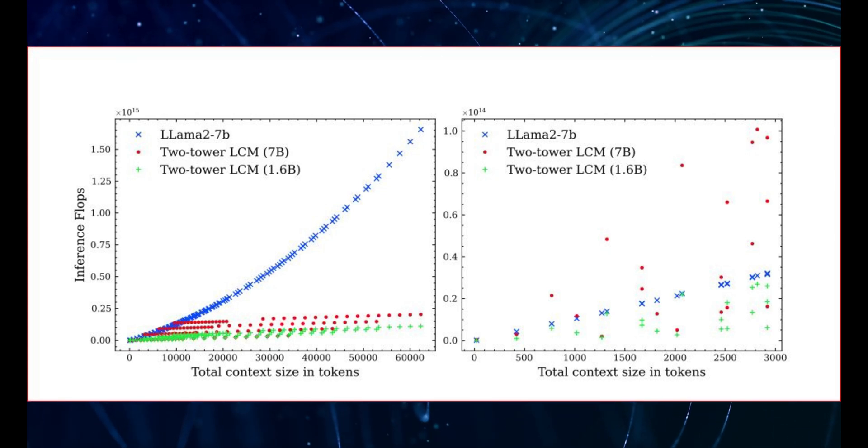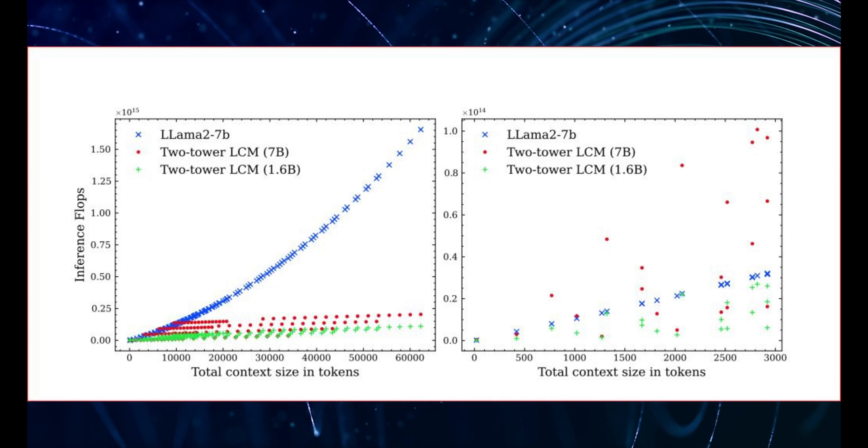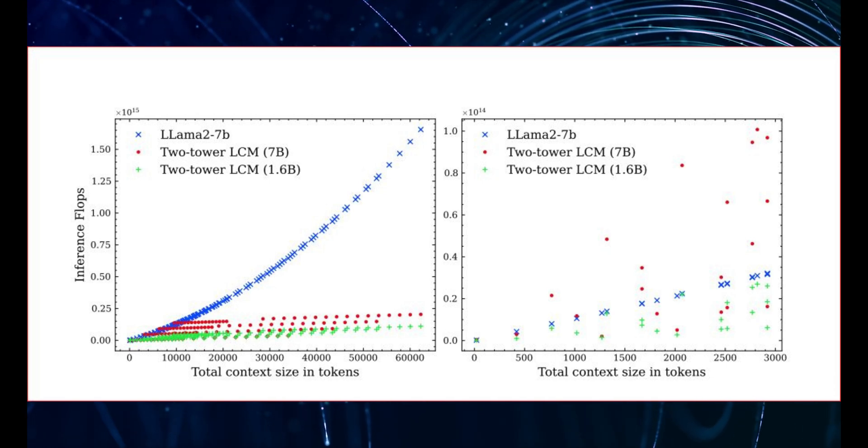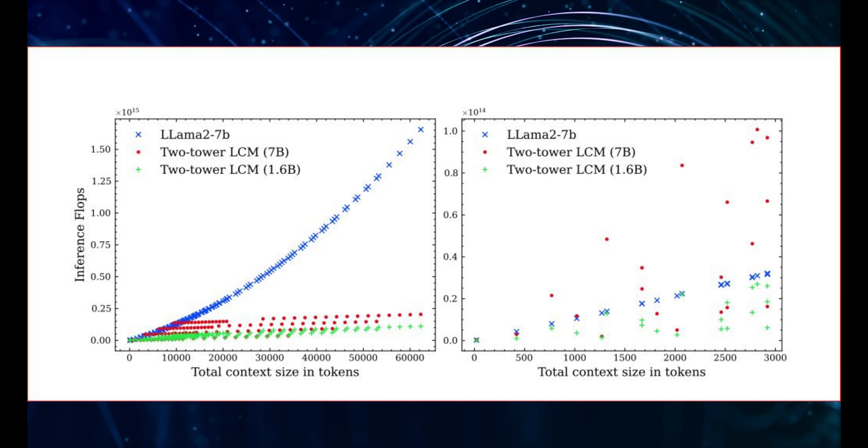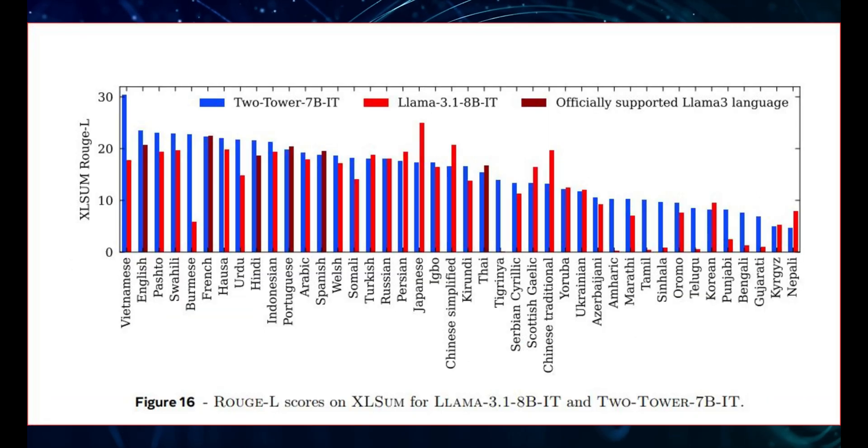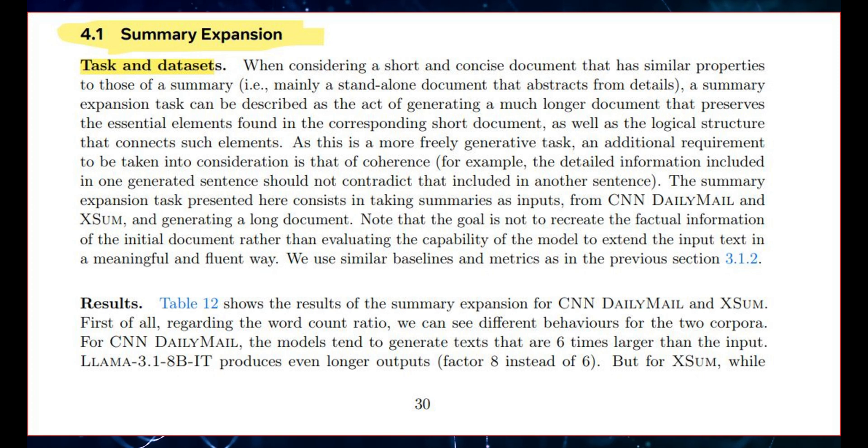So what can this new AI actually do? Well, imagine way better translations, even for those smaller languages that don't have tons of data. That's one thing. And for summarizing stuff, LCM could actually get the main idea of a document, not just mashup random sentences. Chatbots, they could finally be smart enough to have real conversations.